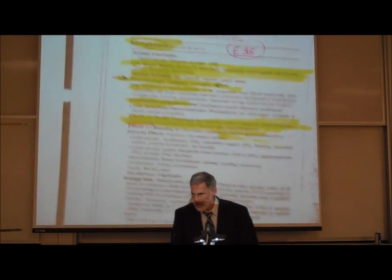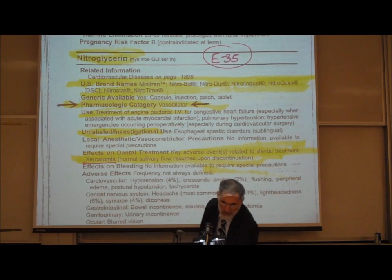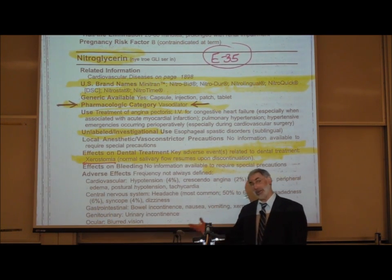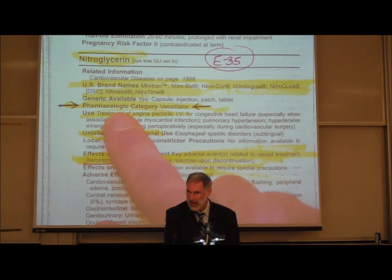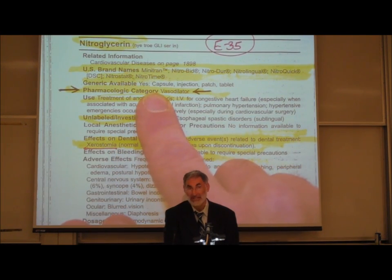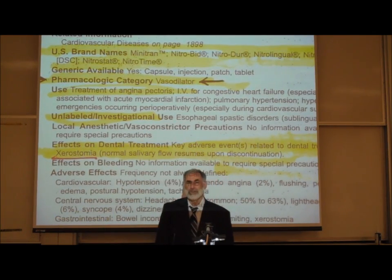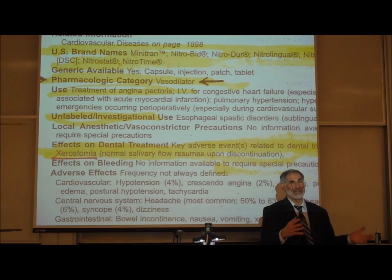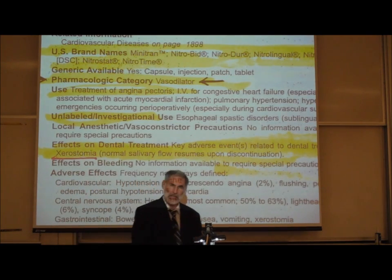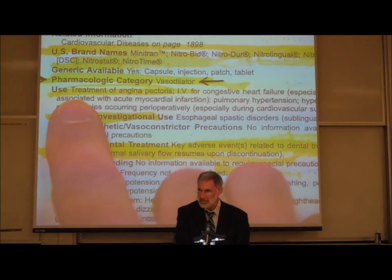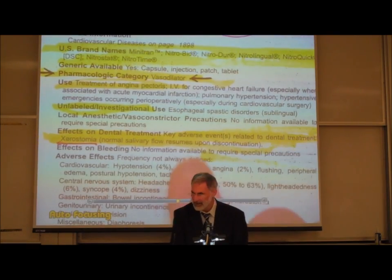On E35, from your lexicon book on nitroglycerin — nitroglycerin goes under a lot of different brand names and there is a generic available. Its pharmacologic category is a vasodilator. It's not working by blocking adrenaline receptor sites, it's not a parasympathomimetic or sympathomimetic — it directly relaxes vascular smooth muscle. It's used in the treatment of angina pectoris and can be given IV or by different routes.